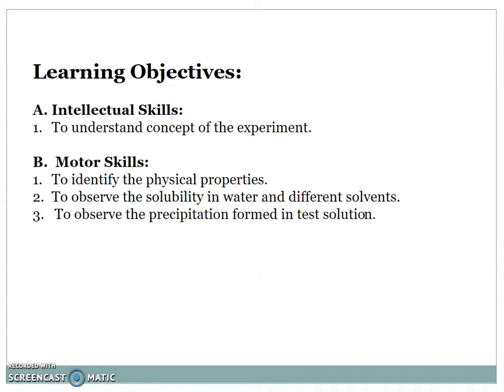First, let's start with the learning objectives. The first is intellectual skill — to understand the concept of the experiment. Motor skill: to identify the physical property, to observe the solubility in water and different solvents, and to observe the precipitation formed in the test solution.